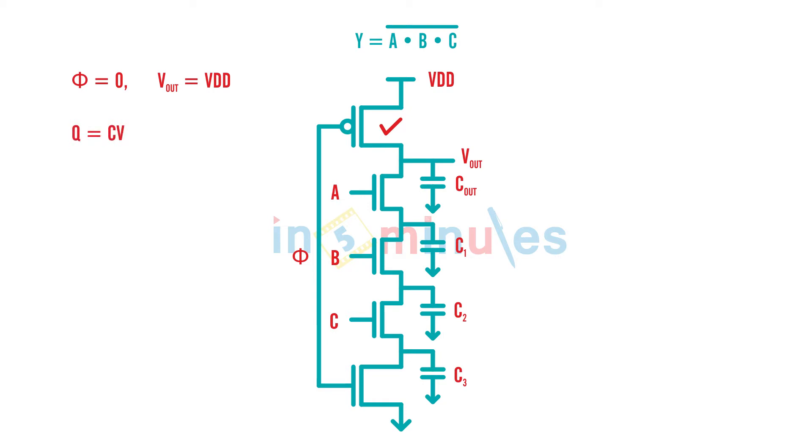At this point of time if I have to ask what is my total charge on my system or on my circuit, you will say Q equal to nothing but given by CV because it's an output capacitance which is given by C_out and it's getting charged to VDD. The initial charge on my system is nothing but C_out into VDD. Let's call this expression 1 for the time being.